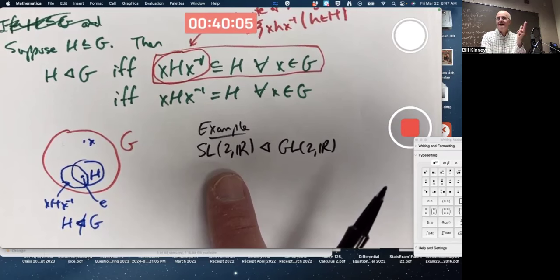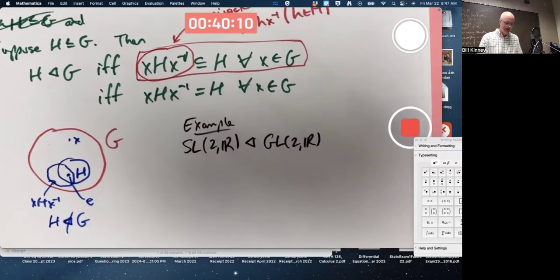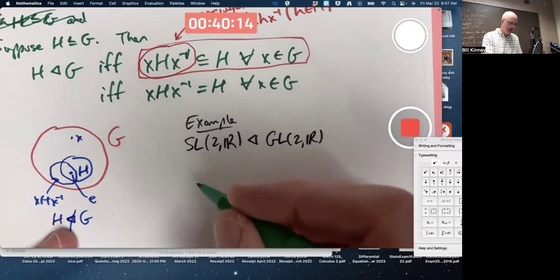If the determinant's one, it's not zero. So this is definitely a subset of that. In fact, it's a subgroup. It's closed under multiplication. If you multiply two matrices with a determinant equal to one, by this property of determinants, the product also has determinant equal to one. If A and B have determinant one, so does their product.